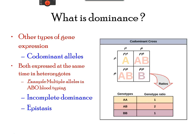Codominance is another variation in which both alleles of the same characteristic are simultaneously expressed in the heterozygote. The best example of codominance is seen in ABO blood type. The A and B alleles are expressed as type A or type B blood. However, if both alleles are present together, the result is AB blood type. This also follows a 1:1:1 genetic ratio.